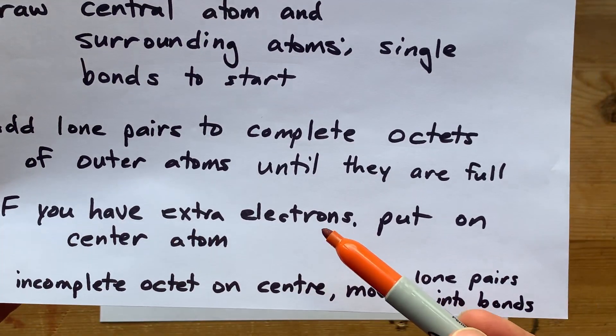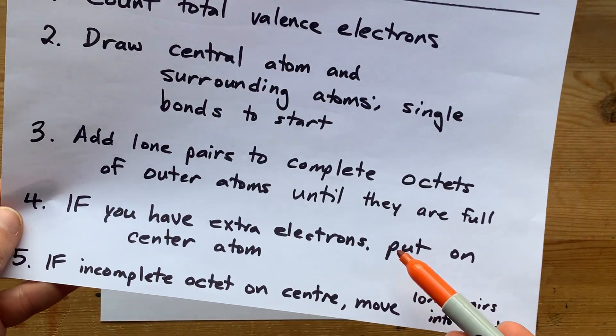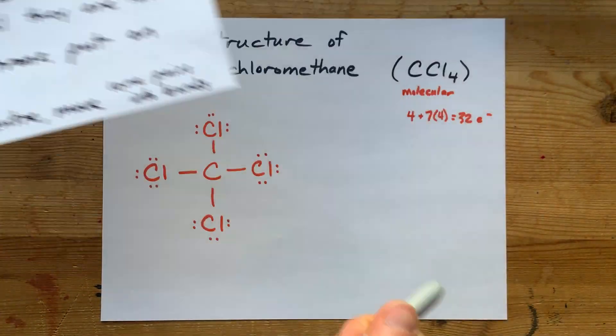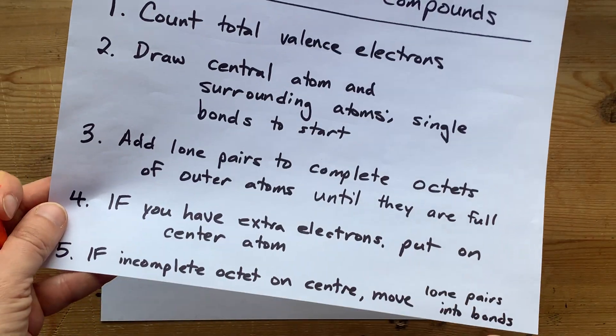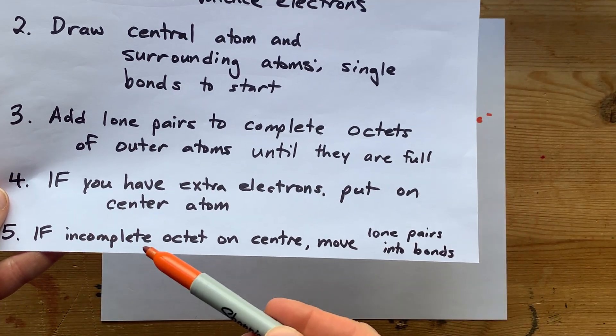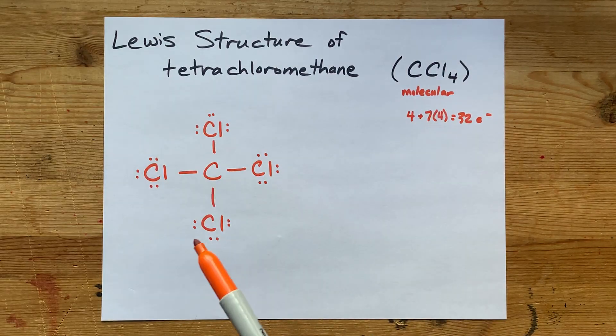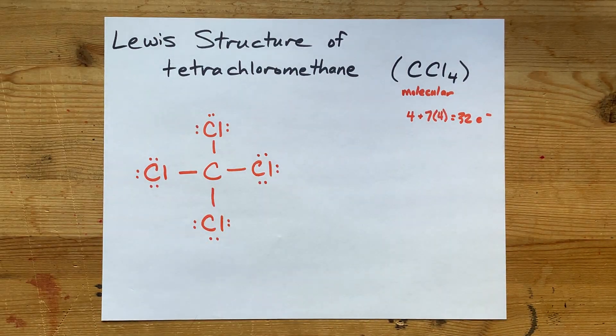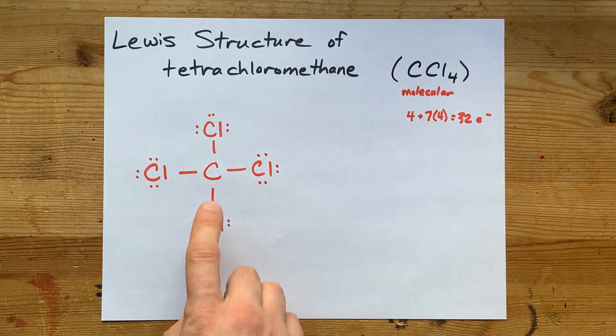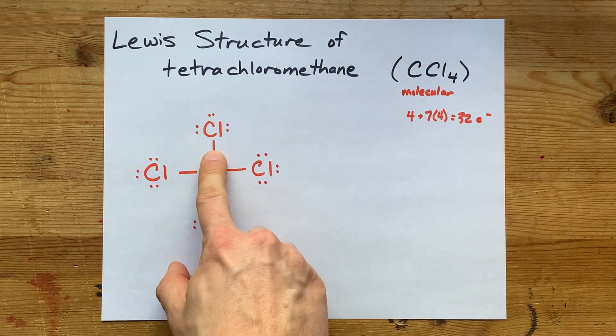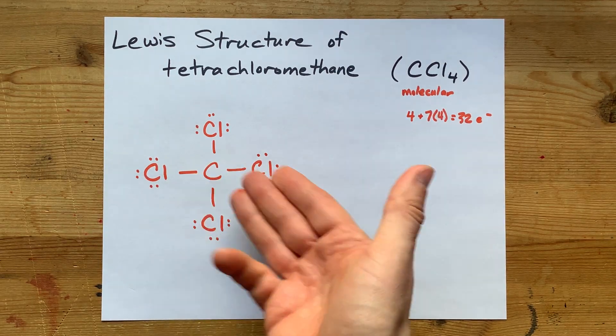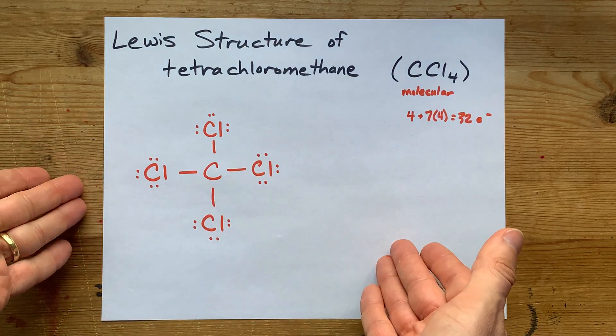If you have extra electrons, which we don't, we would dump them on the central atom. If there's an incomplete octet on the center atom, we'll move lone pairs from the outer atoms into double and triple bonds. But this carbon already has 2, 4, 6, 8 valence electrons around it. This is it. I'm done.